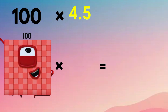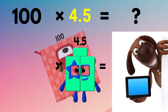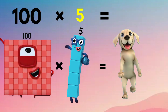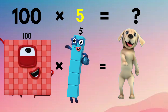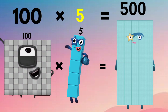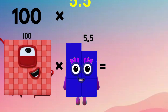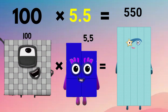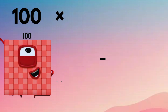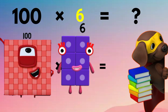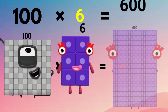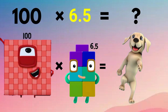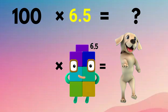100 x 4.5 equals 450. 100 x 5 equals 500. 100 x 5.5 equals 550. 100 x 6 equals 600. 100 x 6.5 equals 650.